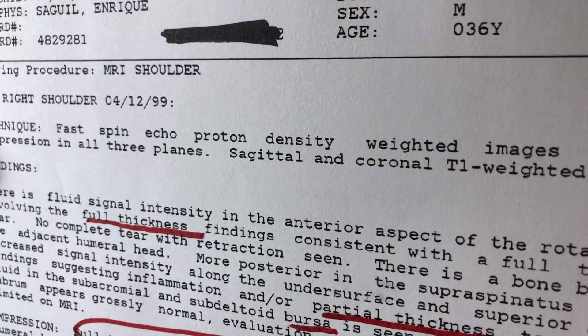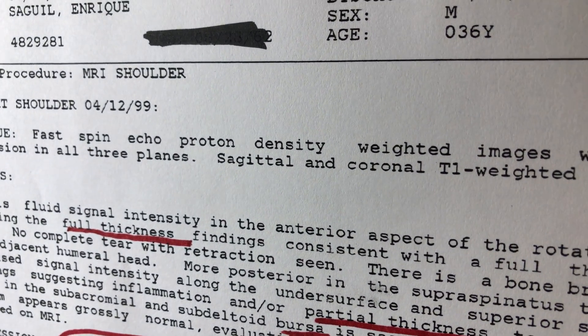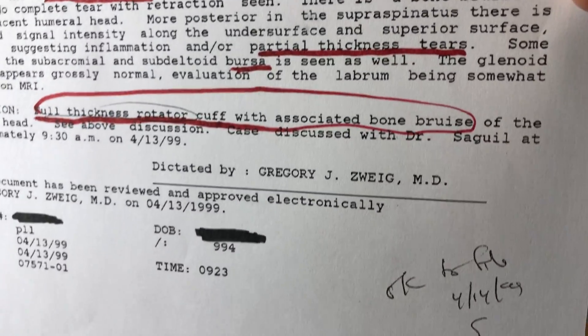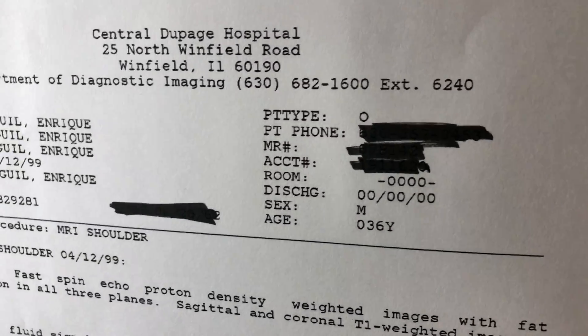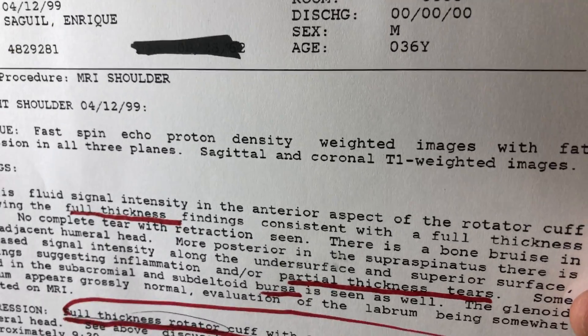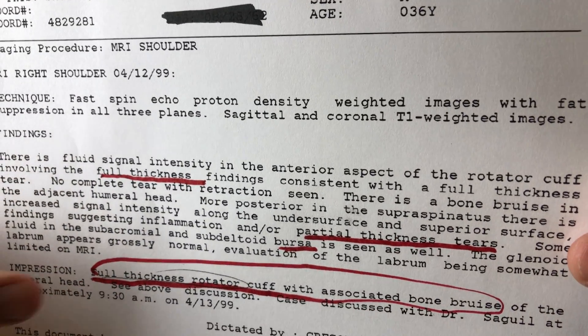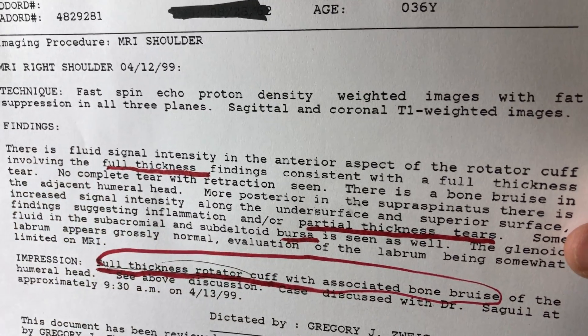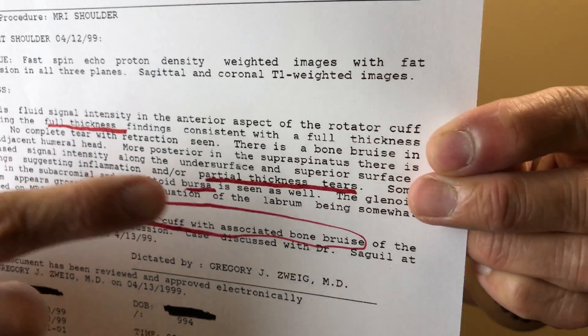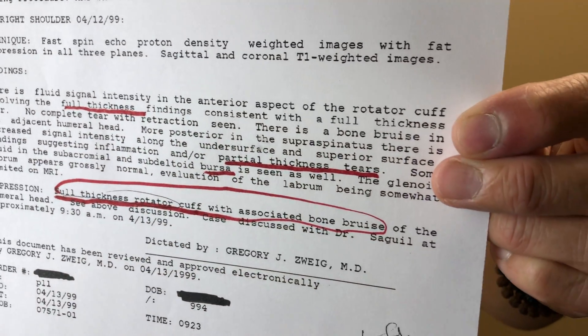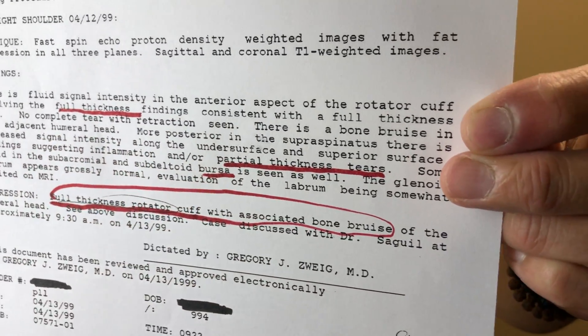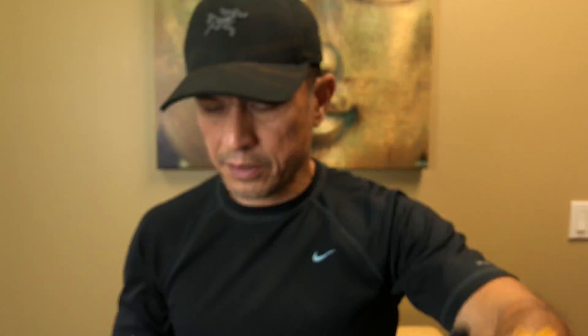I should probably do full disclosure first. This is my 1999 evaluation done at Central DuPage Hospital — it covers my rotator cuff shoulder MRI. Specifically, down here in the impression: full thickness tear, also potentially associated partial thickness tear, and maybe some bursitis.